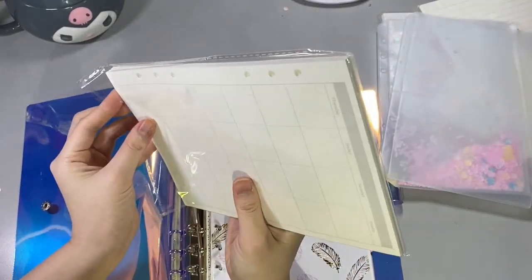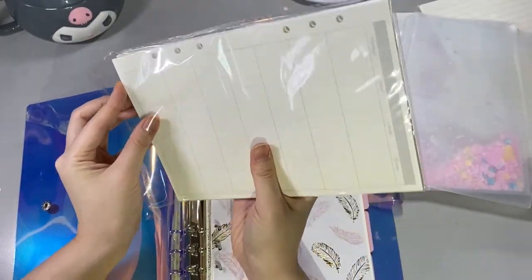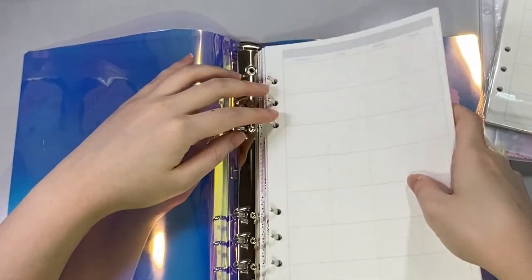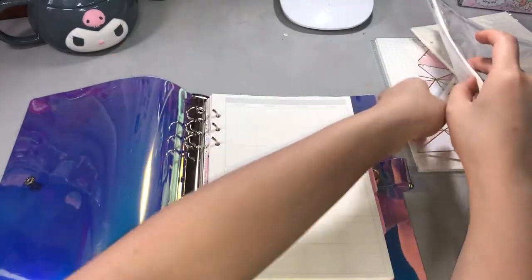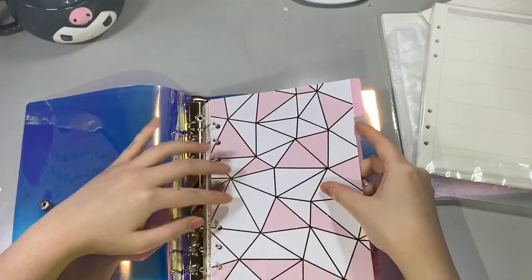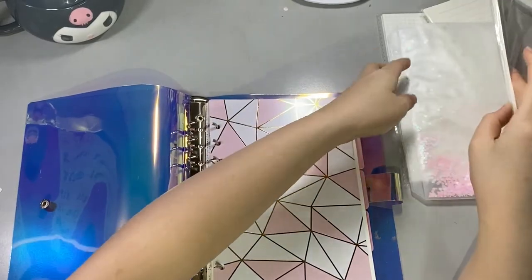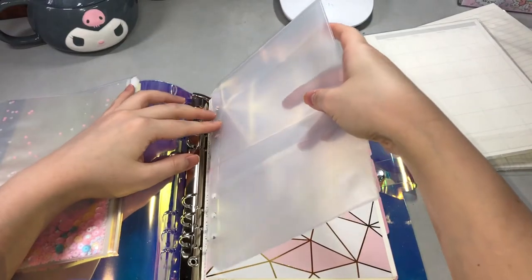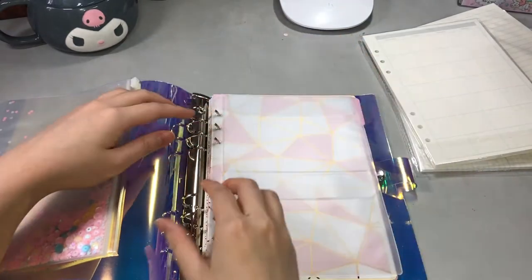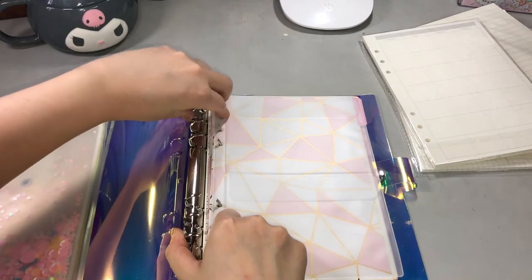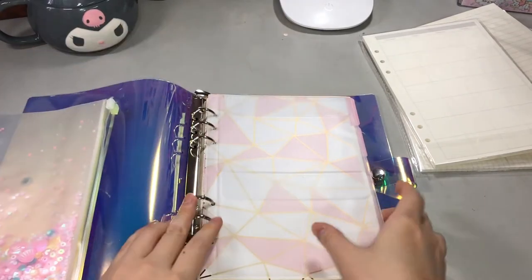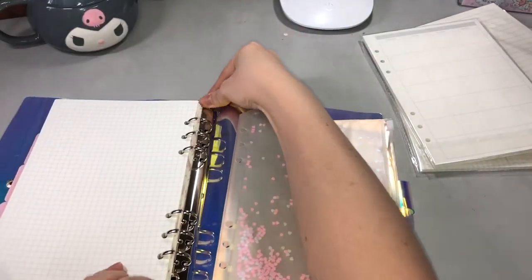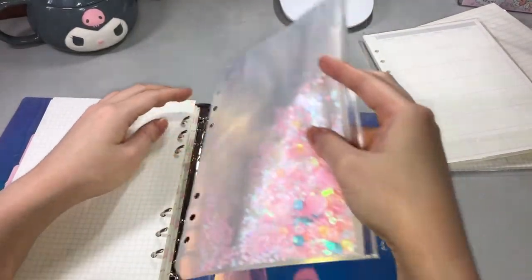I got all of this from Shopee, so I'll be putting down in the description box below the name of the shop where I got all these journaling refills and the binder itself. I'm using the soft PVC type of six-ring binder, this is A5 size with a holographic rainbow cover. And then I bought two pocket refills, one with the division into two pockets for my sticker flakes.